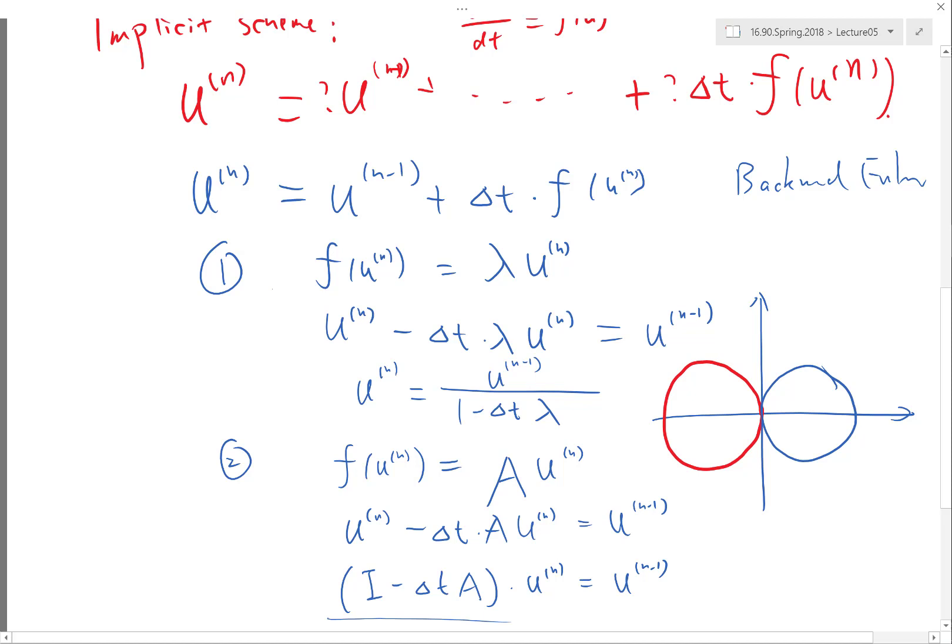Can you say again which one? In this method, for example, we use backward Euler inside the implicit method to solve for u. Yeah, if you use forward Euler you can, but you lose the stability.